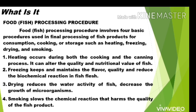Food Processing Procedure involves four basic procedures used in the final processing of fish products for consumption, cooking, or storage: heating, freezing, drying, and smoking. Heating occurs during both the cooking and the canning process and can alter the quality and nutritional value of fish. Freezing keeps and maintains the flavor, quality, and reduces the biochemical reaction in fish flesh. Drying reduces the water activity of fish and decreases the growth of microorganisms. Smoking is the fourth procedure.